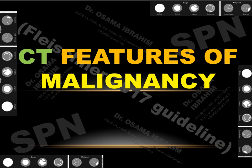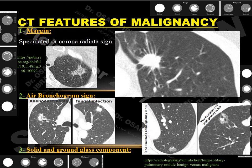Let us examine the CT features of malignancy to discriminate benign from malignant solitary pulmonary nodules. The first and most important feature is the margin. If the solitary pulmonary nodule has corona radiata or spiculated margins — as seen in these solid nodules — this raises the possibility of malignancy. Even ground glass nodules with corona radiata or radiating margins are highly suspicious for malignancy.